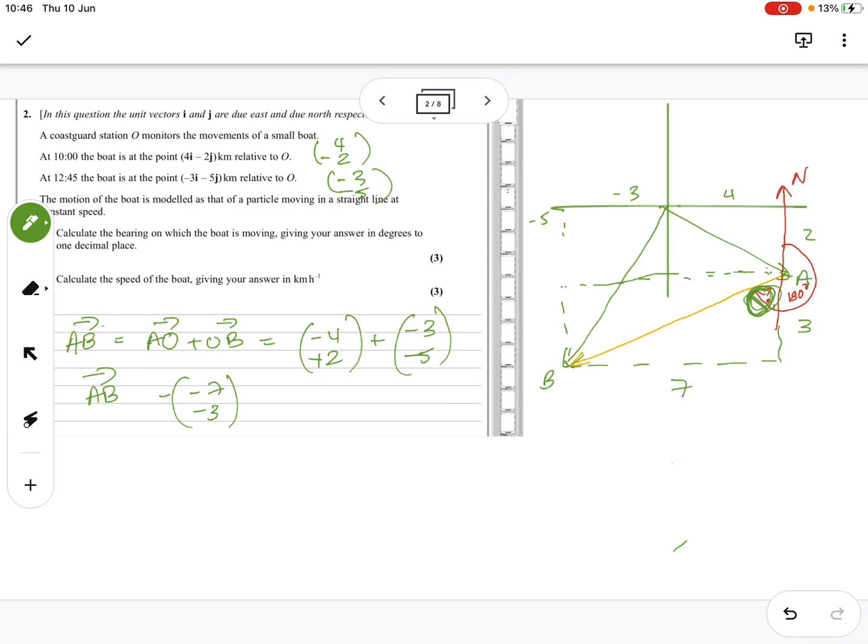So to get that angle, using SOHCAHTOA, that angle, this angle here, seven is opposite. So I've got opposite and adjacent. So it's tan theta equals seven over three, which I've got as 66.8.